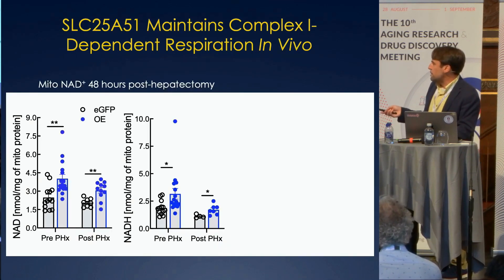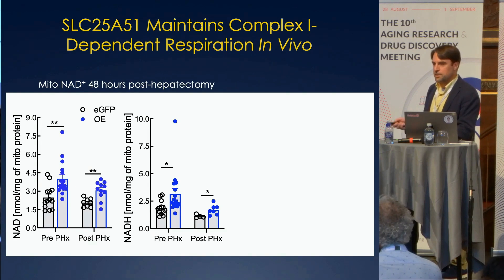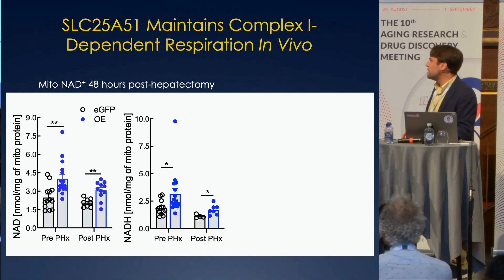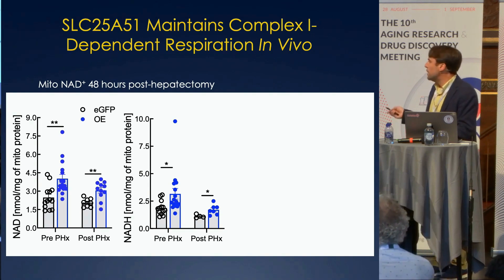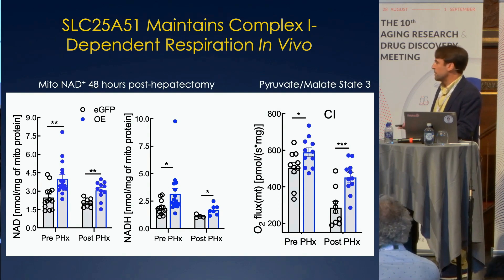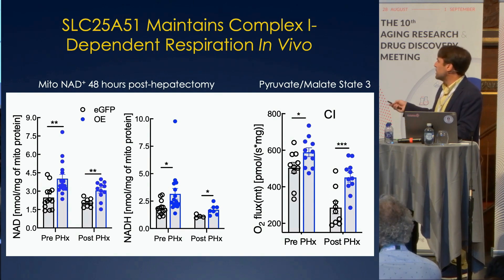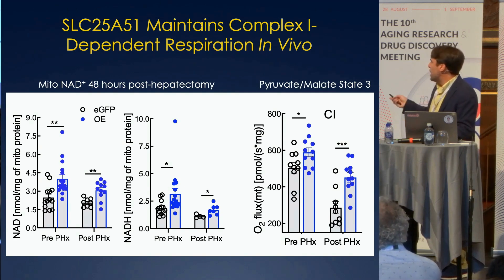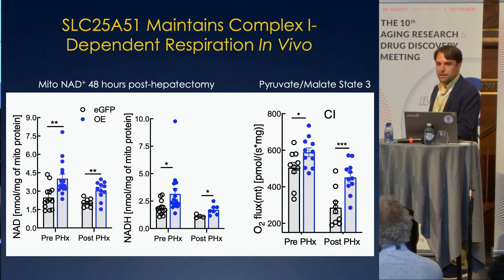NAD levels remain high both pre and post hepatectomy, and NADH follows about the same pattern — so there's not a major shift in the redox state, the ratio between NAD and NADH. There's really just more of both with about the same ratio maintained throughout the regeneration process. That translates to increased activity of complex one in the mitochondria and increased total complex one-dependent respiration. We see that even pre-hepatectomy, and after the hepatectomy, as NAD levels are falling, we can dramatically restore respiratory capacity by having more NAD in the mitochondria.